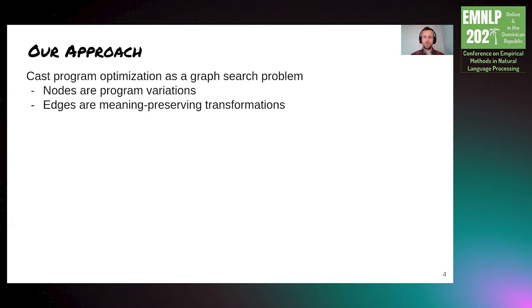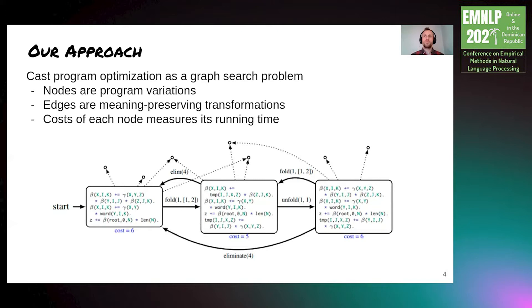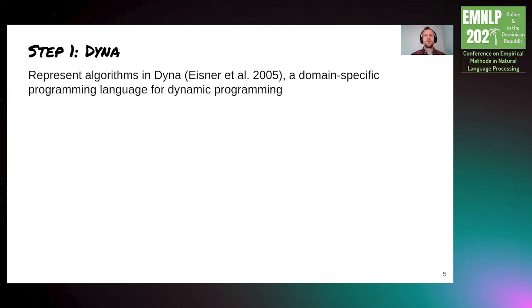Our approach to automatically optimizing dynamic programs is to cast it as a graph search problem, where the nodes of the graph are program variations, the edges are meaning-preserving transformations between programs, and the cost of each node measures the program's running time. Here's a glimpse of what our search graph looks like. We represent our algorithms in Dyna, which is a high-level language for dynamic programming. The benefit of doing so is that it abstracts away low-level implementation details, which can easily be worked out by the language's compiler.